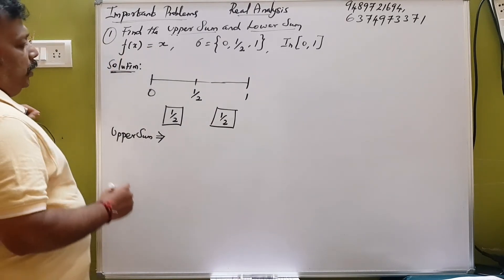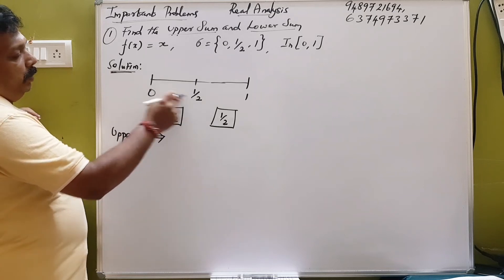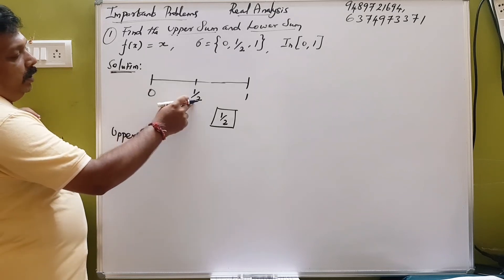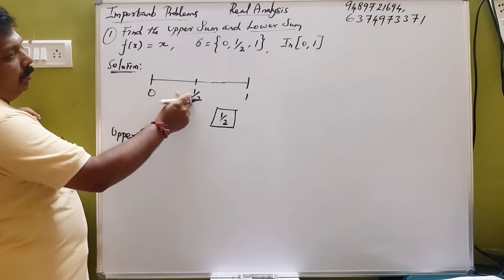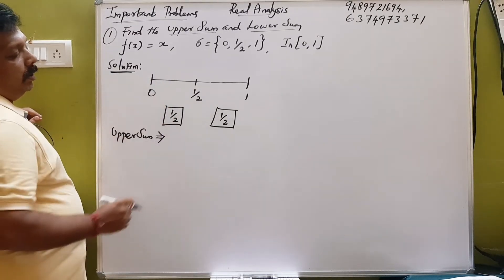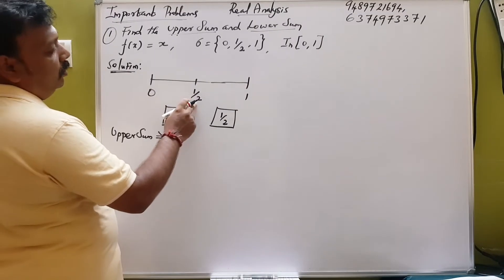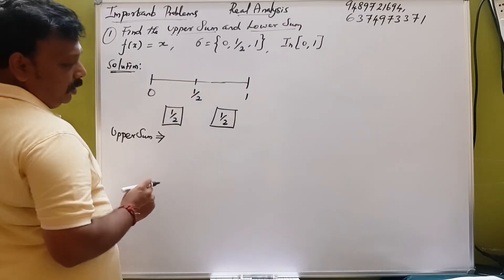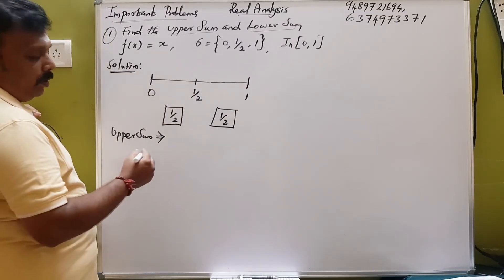Now, if you have two intervals, it is 1 by 2. That's right. So, if you have two intervals, it is 1 by 2. So, let's go to 1 by 2 — how do we go?